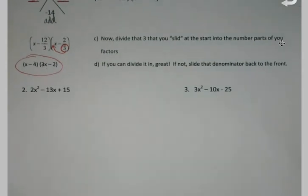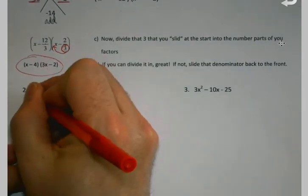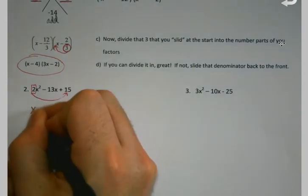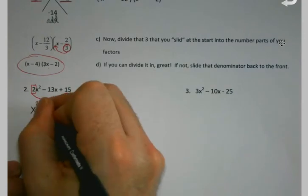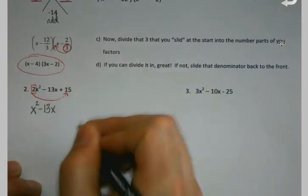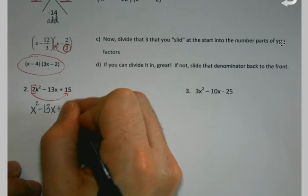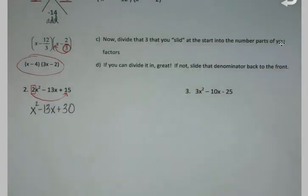If I see a number in front, we're going to swing that back over to the end. So this will just become plain old x squared. But that 2 that I swung down, I'm going to multiply. 2 times 15 is 30. So I'm always going to do that first step to slide and multiply.